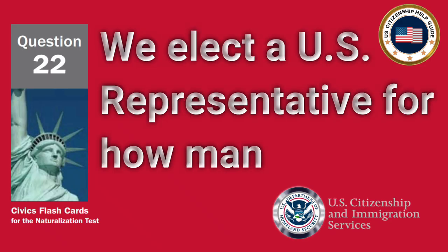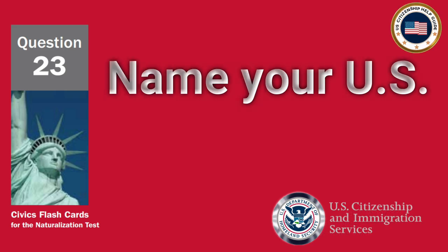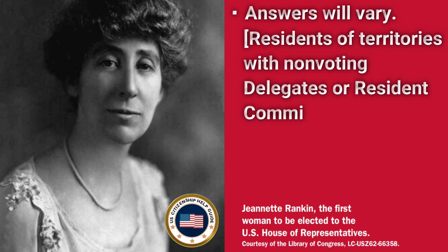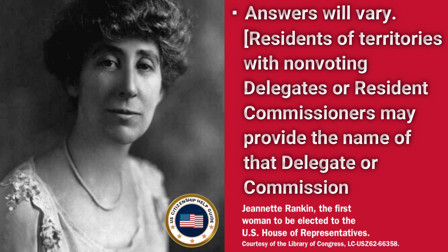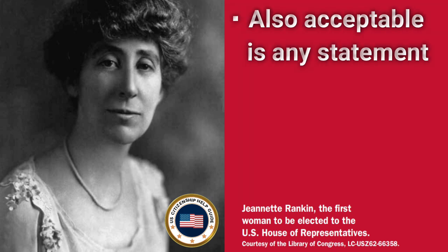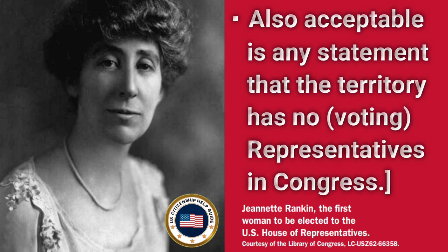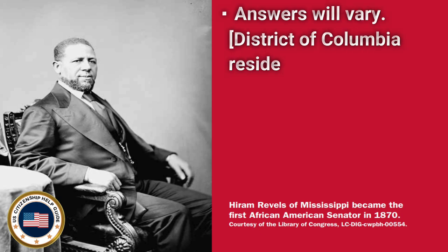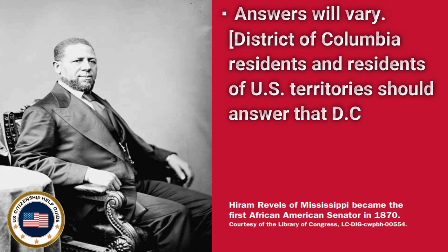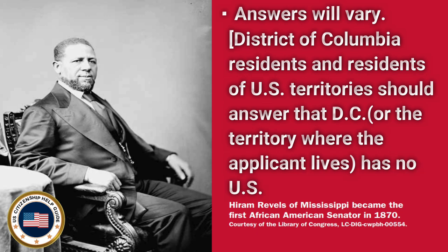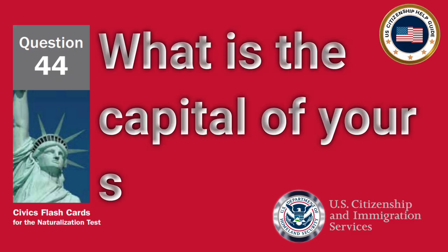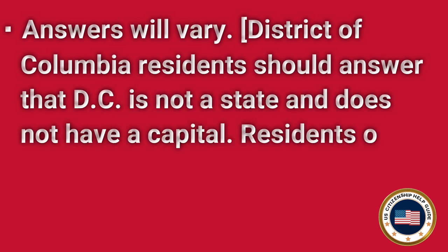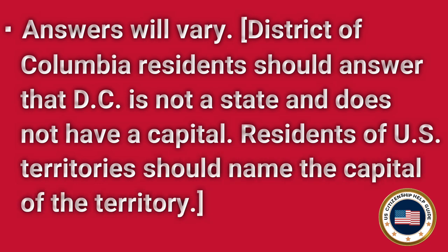We elect a U.S. representative for how many years? Two. Name your U.S. representative. Answers will vary. Residents of territories with non-voting delegates or resident commissioners may provide the name of that delegate or commissioner. Also acceptable is any statement that the territory has no voting representatives in Congress. Who is one of your state's U.S. senators now? Answers will vary. District of Columbia residents and residents of U.S. territories should answer that D.C. or the territory where the applicant lives has no U.S. senators. What is the capital of your state? Answers will vary. District of Columbia residents should answer that D.C. is not a state and does not have a capital. Residents of U.S. territories should name the capital of that territory.